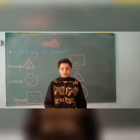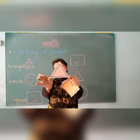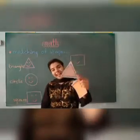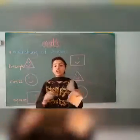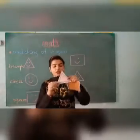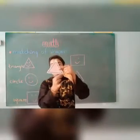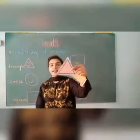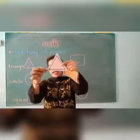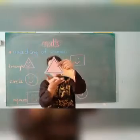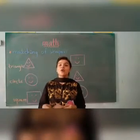Now let's move towards the second one, which is triangle. Which shape is this, kids? It is a triangle. Triangle has three sides and three corners. Sides aur corners mein kya difference hota hai, bacho? These are the sides, and these are the corners — the corners are where the lines join. Triangle has three sides and three corners. Very good.